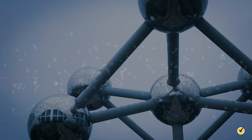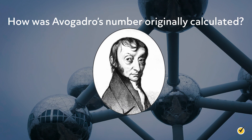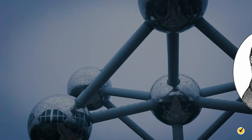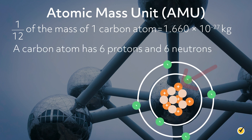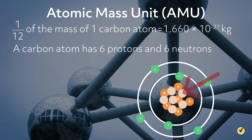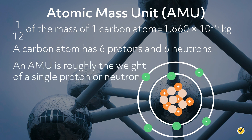Let's unpack that. We need to understand how Avogadro's number was originally calculated, because scientists didn't pick 6.022 times 10 to the 23rd for the way it rolls off the tongue — they picked it because it makes calculations easier and more intuitive. The atomic mass unit is defined as 1/12th of the mass of one carbon atom, which is 1.660 times 10 to the negative 27th kilograms — a very, very small number. A carbon atom has six protons and six neutrons, which make up the vast majority of the atom's weight, so an AMU is roughly the weight of a single proton or neutron.